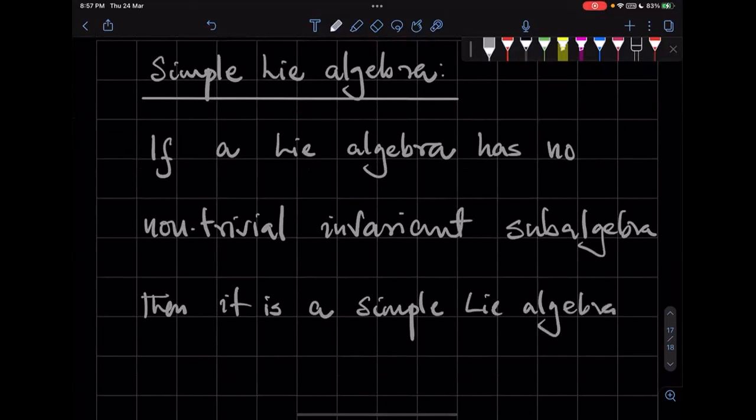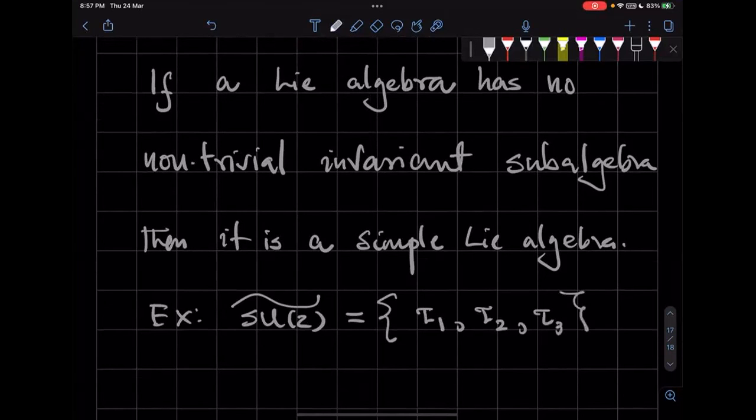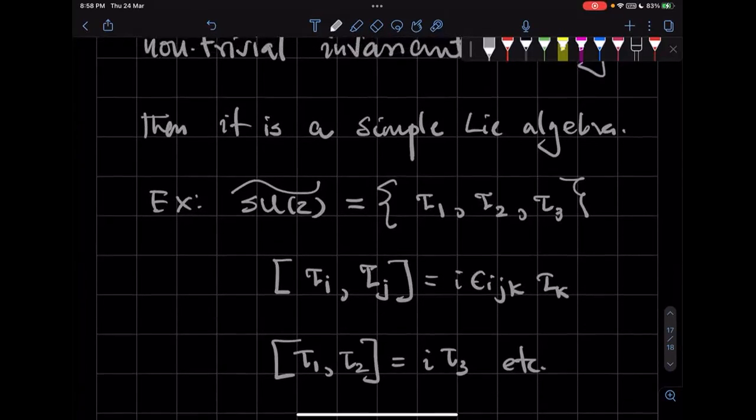Okay, so let's give an example. The Lie algebra of SU(2) consists of three generators τ1, τ2, and τ3, and the commutator of τi and τj is i·εijk·τk, or τ1, τ2 commutator is i·τ3, etc., right?